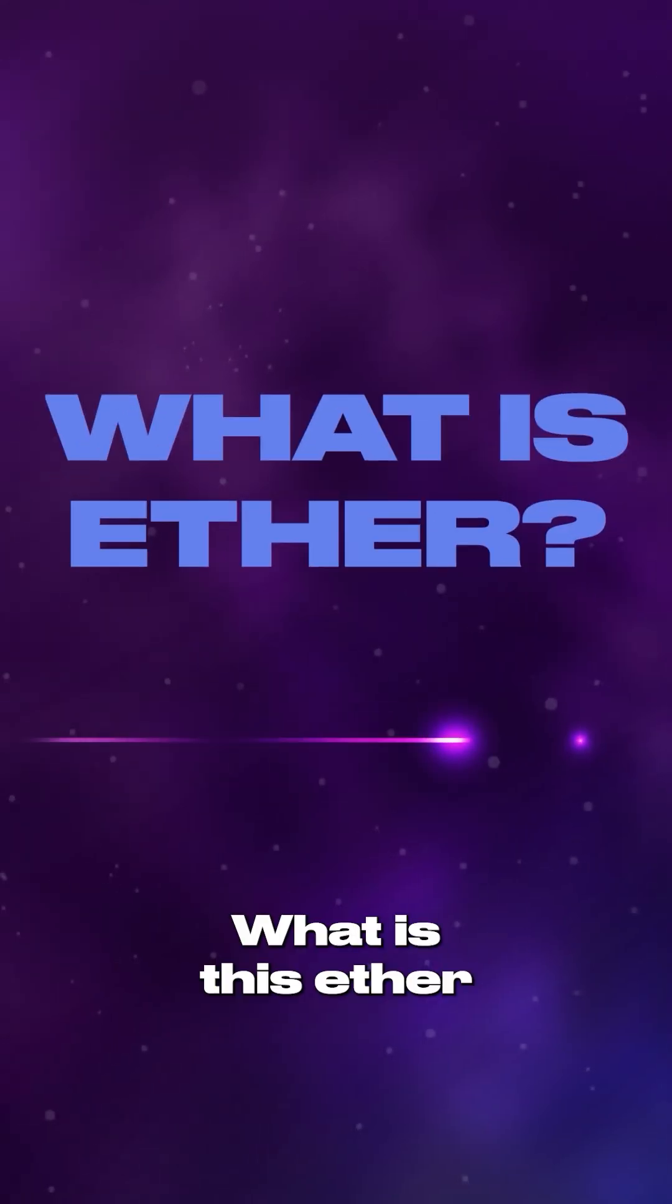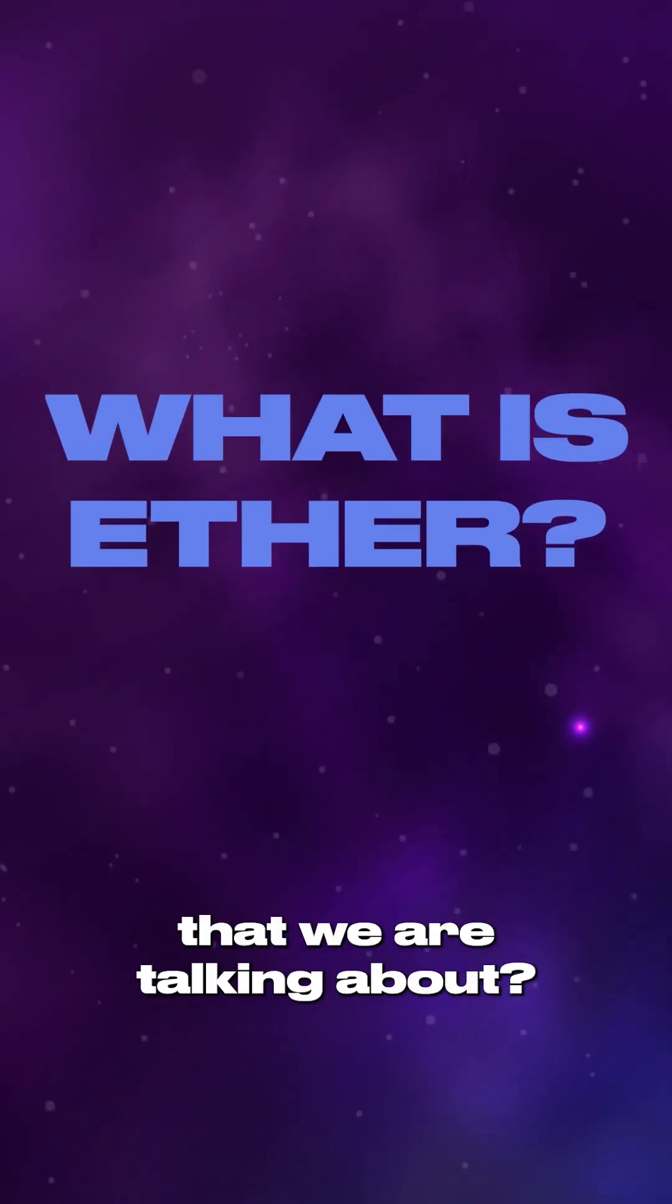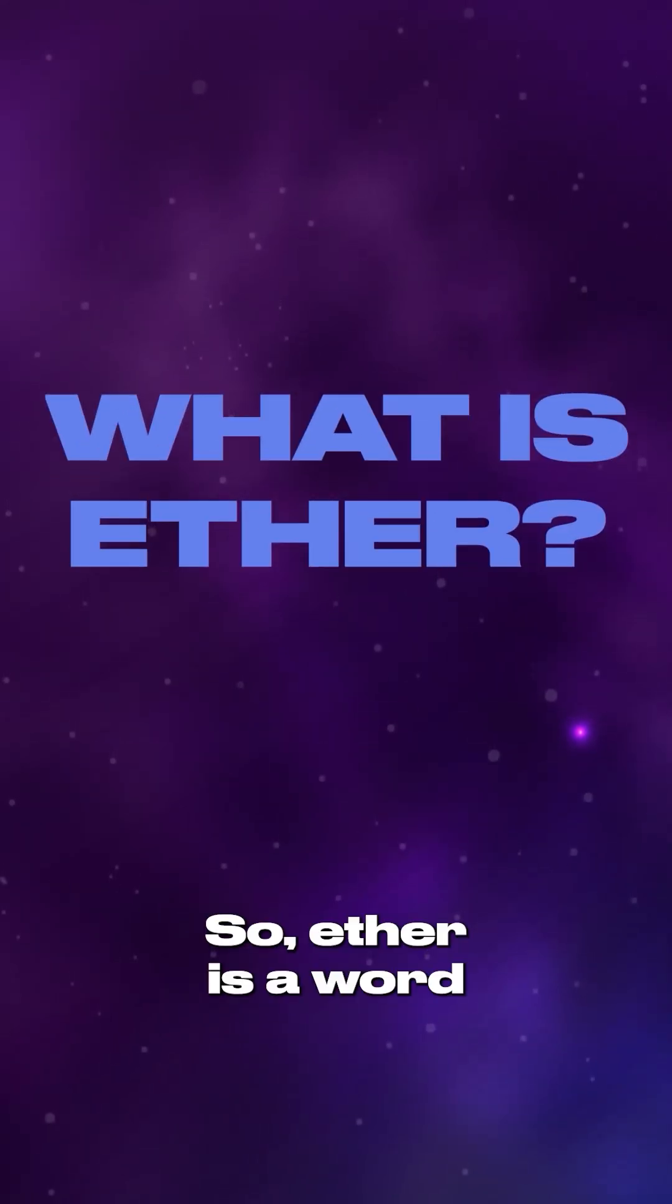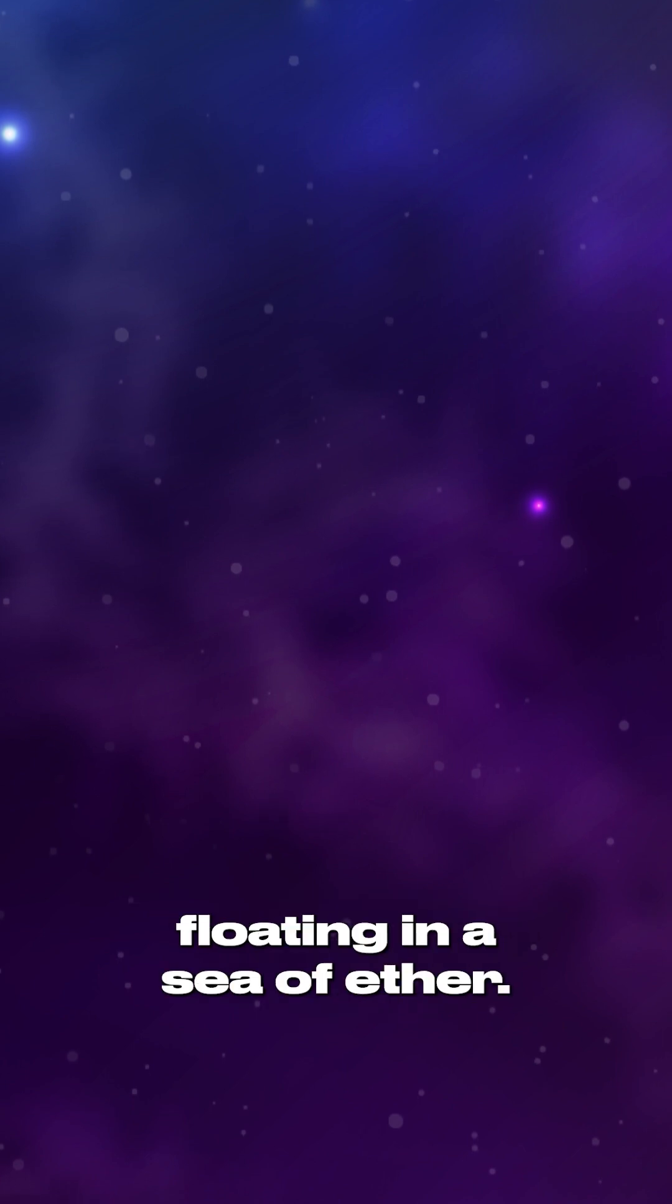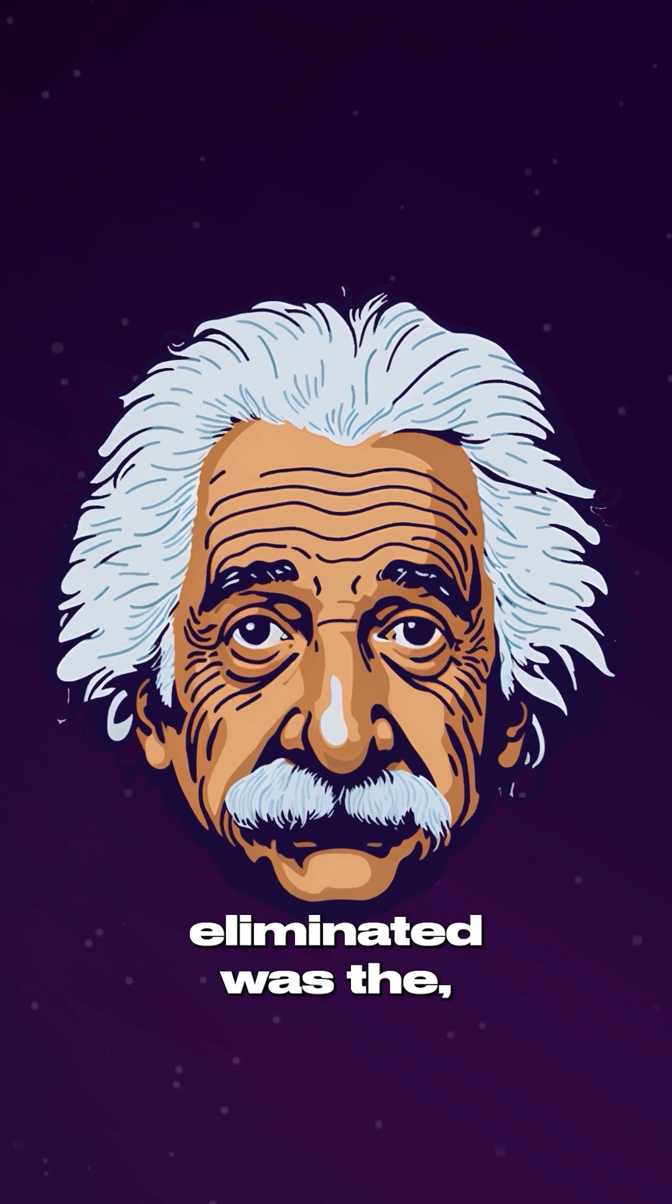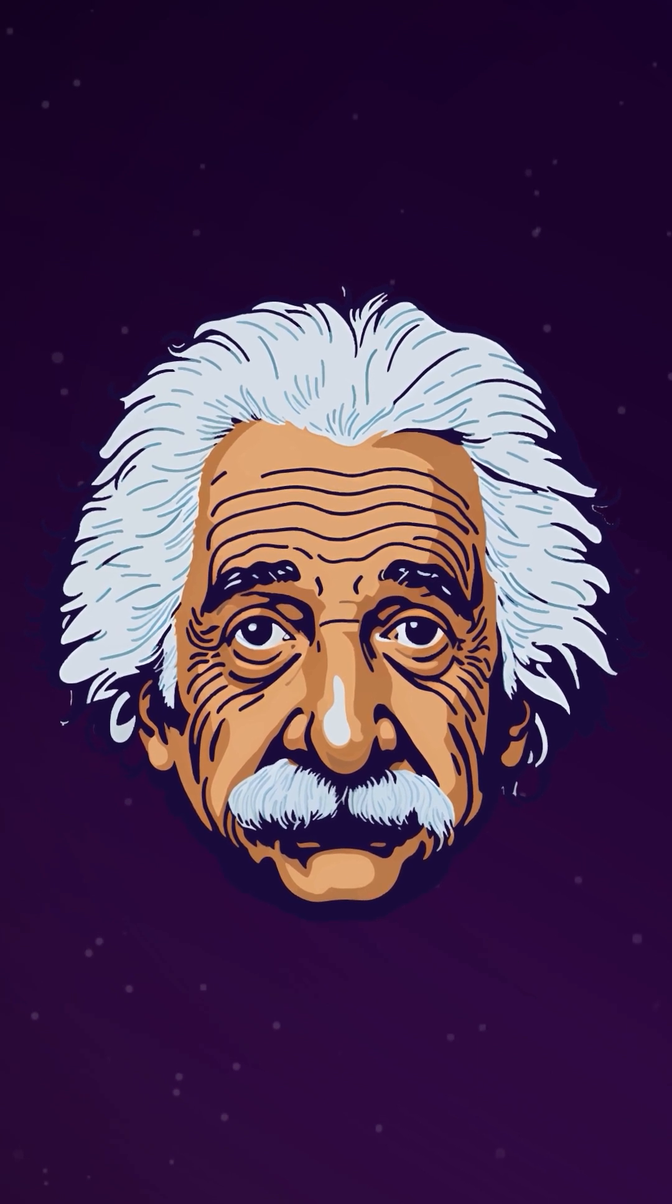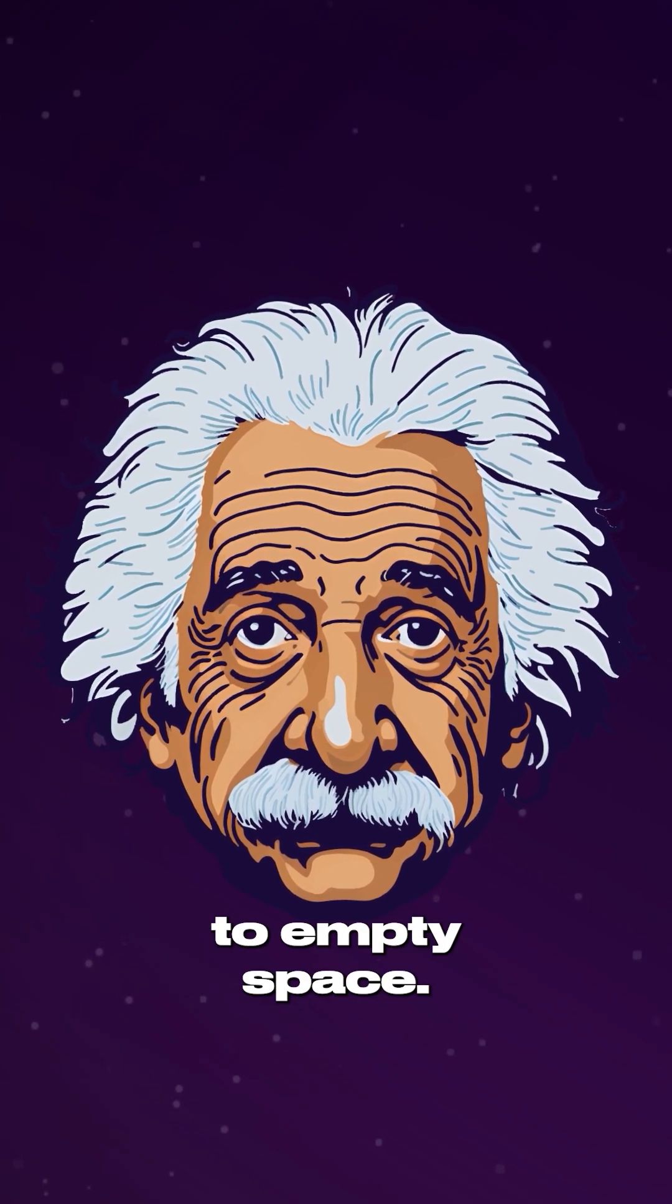What is this ether that we are talking about? So ether is a word that's been used for thousands of years to represent properties of vacuum space. The universe has always floated in the sea of ether. The first principle Einstein eliminated was having an ether in the model. Assign no properties to empty space.